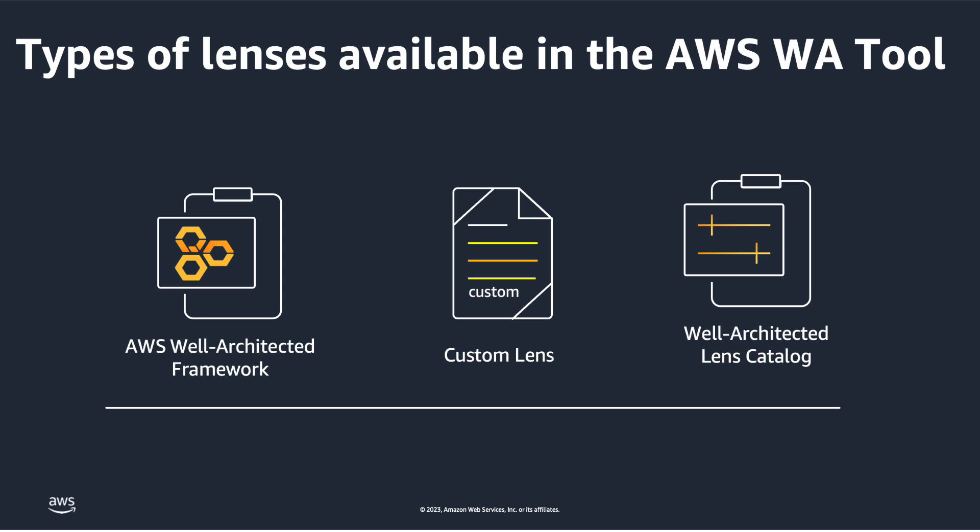With the launch of Lens Catalog, there are three types of lenses available in the Well-Architected tool. First, the AWS Well-Architected framework provides general guidelines on cloud computing best practices. Second, Custom Lens lets you bring your own best practices to complement the existing framework based on your industry, operational plans, and internal processes. Custom lenses can be beneficial for organizations with unique compliance requirements, industry-specific standards, or complex architectural needs. It provides a way to systematically assess workloads for alignment with the organization's own standards in addition to AWS Well-Architected best practices.